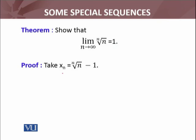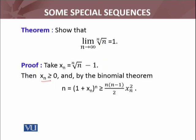We define a new sequence x_n with the help of the nth term of this sequence: x_n = n^(1/n) - 1. Now, x_n ≥ 0 — you can verify this; in fact by mathematical induction you can prove it. And by the binomial theorem, we can write: (1 + x_n)^n ≥ n(n−1)/2 · x_n².